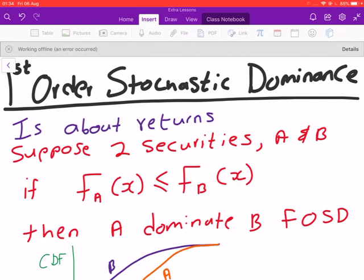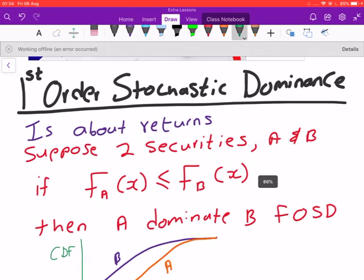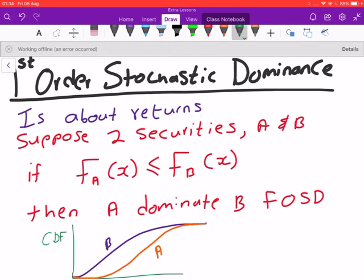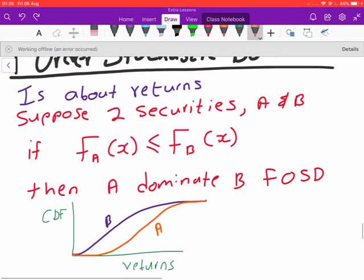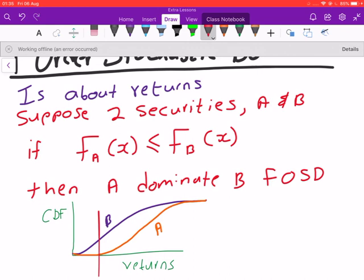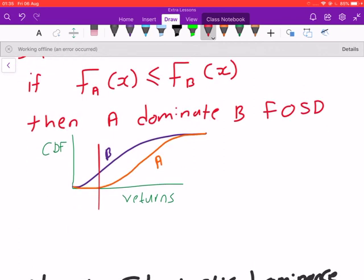Why? Because when you look at B, this simply means that B has a higher probability of yielding lower returns. So basically this means that B has a higher probability of yielding lower returns than A.